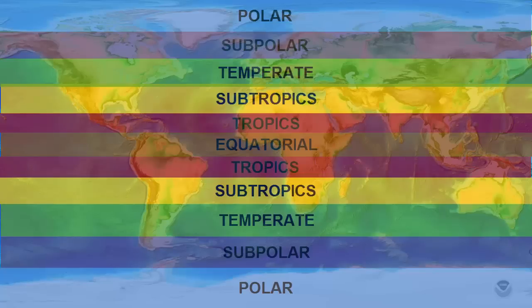Let's review some basic terminology we use to describe different latitude regions on the globe. This image shows how the planet can be divided into zones.